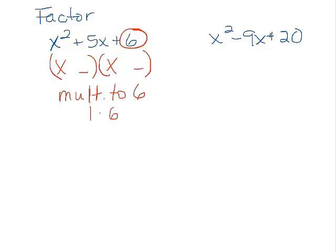What multiplies to 6? 1 times 6, 2 times 3. Don't forget this one. Negative 1 times negative 6, and negative 2 times negative 3. Negative times negative is positive.